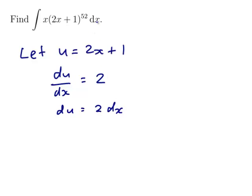And I don't have a 2 to go with the dx, so I'll just divide both sides by 2 to get a half of du equals dx. And so now I can replace the dx with a half du. I can replace the 2x plus 1 with a u. I'll just leave this x here.